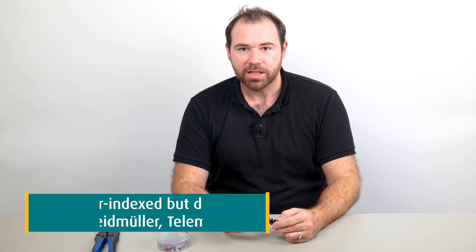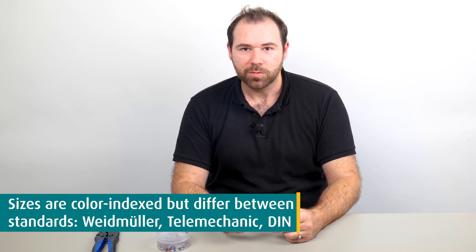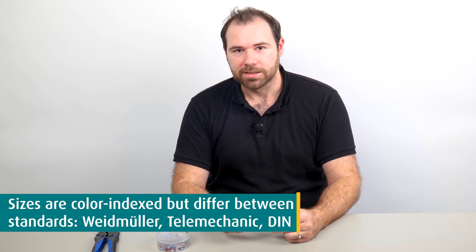Unfortunately, there are three common standards with a different color set each: Weidmüller, Telemechanik and DIN. So always pay attention to the applying standard if you are looking for a specific size based on the color. For the cable we are using here, a DIN black colored one with a cross section of 1.5mm² is the correct choice.